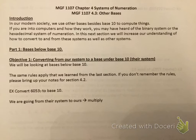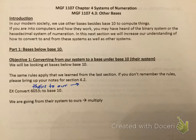We're talking about bases such as base 7, base 6, base 5, base 4, base 3, base 2, etc. The first objective is converting from our system to a base under base 10 — going from our system to theirs. The same rules apply from section 4.2: if we're going to our system — that is, from theirs to ours — we're going to be multiplying, which is actually easier. So if we're going to our system, we multiply.